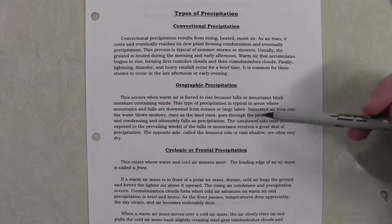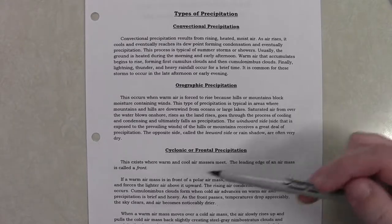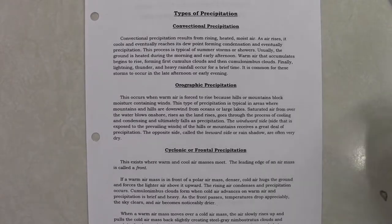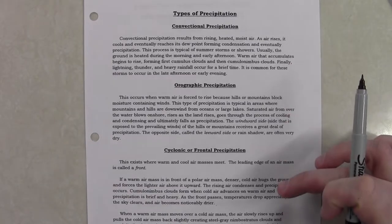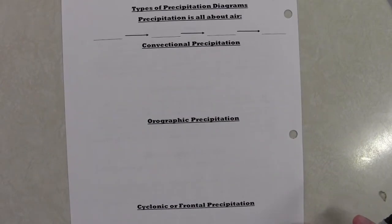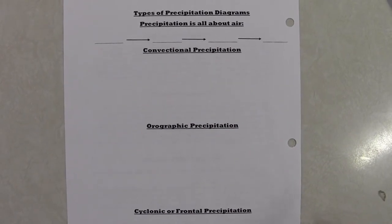Convectional precipitation is really easy, as is orographic. And then cyclonic is a bit of a confusing thing, but it's not overly hard. So we got a bit of a cheesy reading on the front, a quick little description for each one. And then on the back, I thought we could do a bit of a quick little sketch.